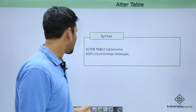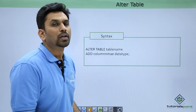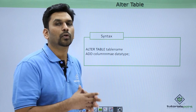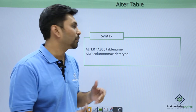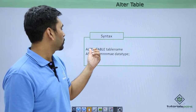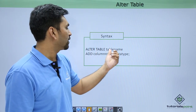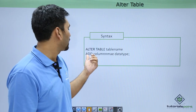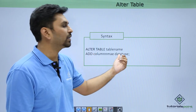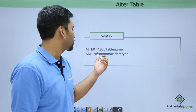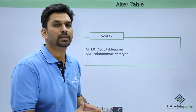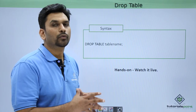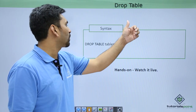Next is ALTER TABLE. Suppose you've created a table and want to alter a column name or add a new column — that can be done through the ALTER TABLE command. You write ALTER TABLE, give the table name, then write ADD followed by the column name and data type. This adds a new column to the existing table. For DROP TABLE, if you want to delete a table, simply write DROP TABLE followed by the table name.